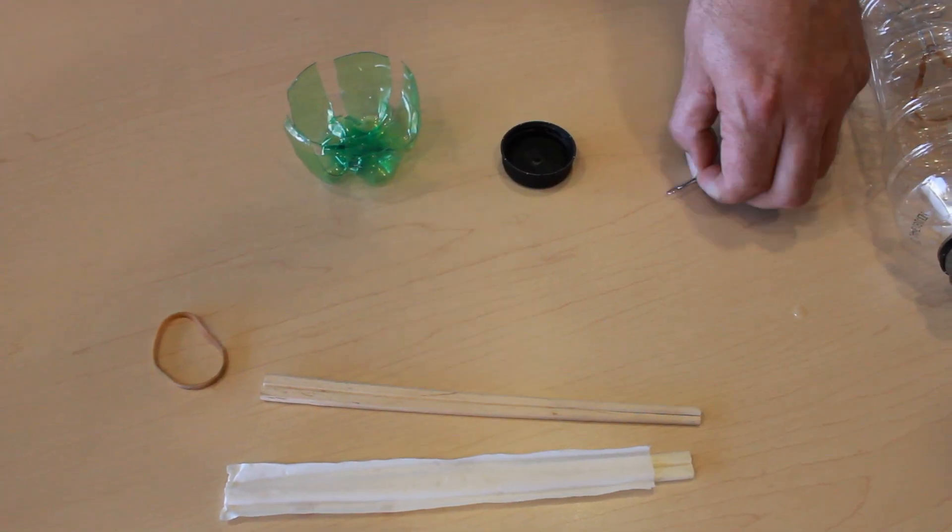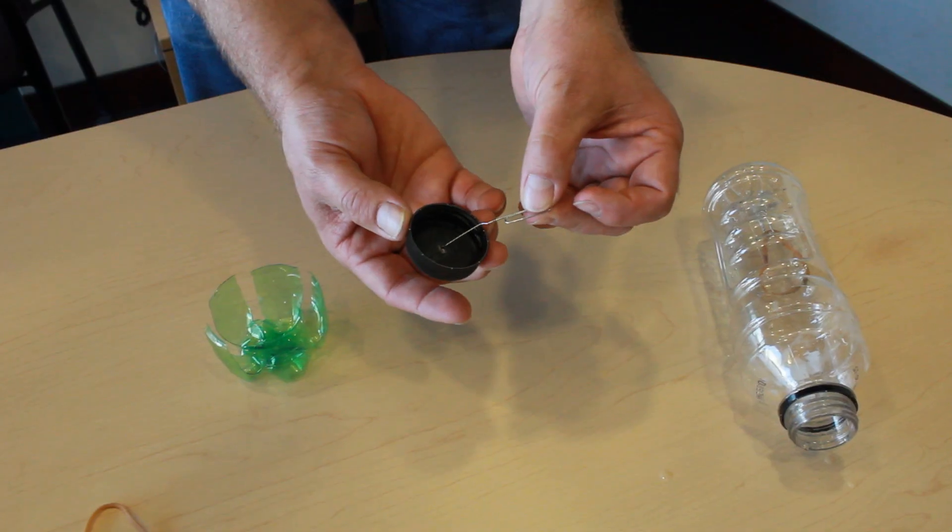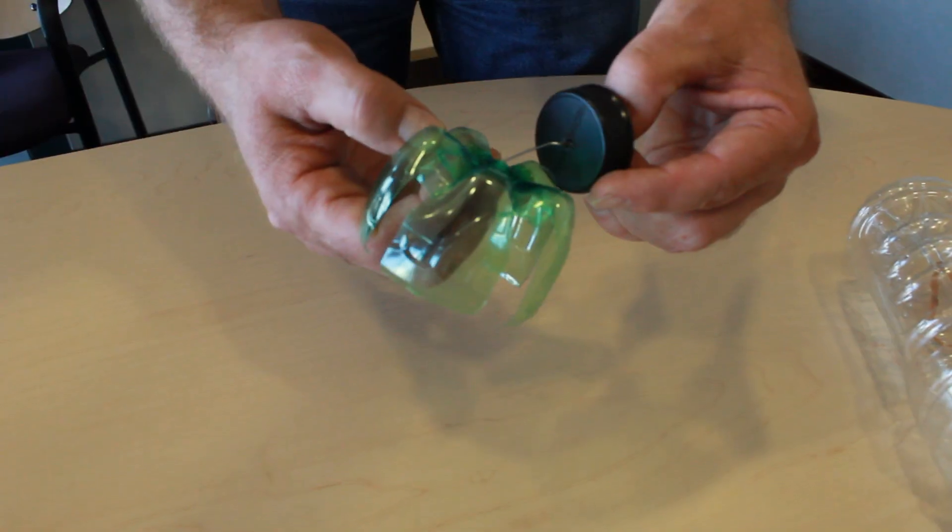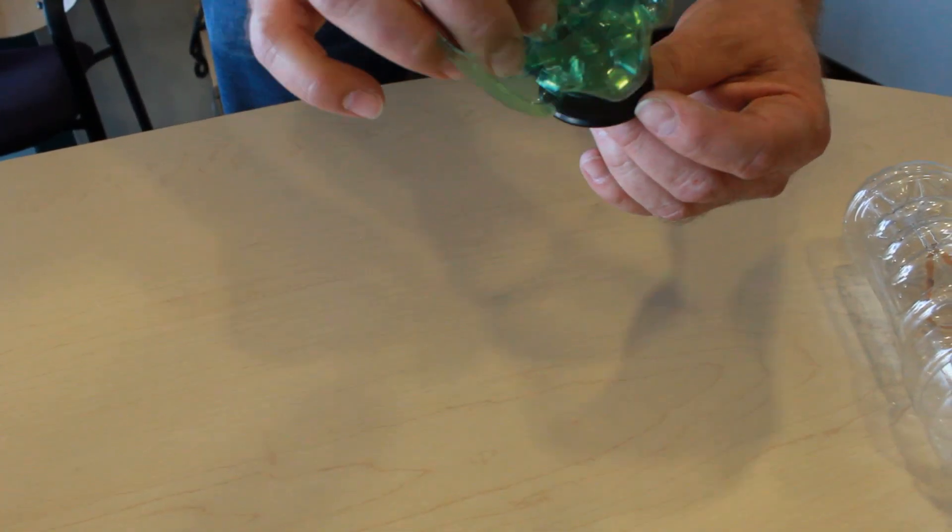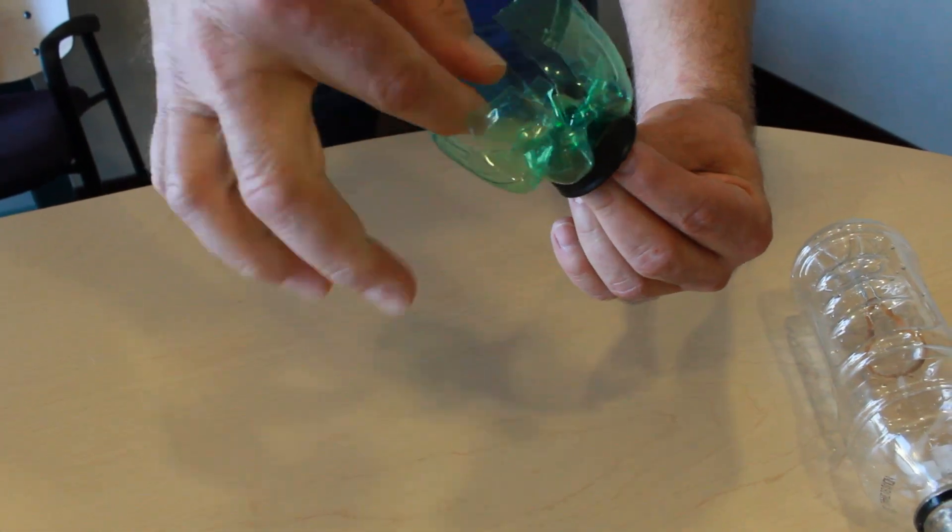Next, we're going to take another paper clip, straighten it out, put it through the hole in the inside of the bottle cap, and then through the hole in our propeller. Now to get it to not fall out, we're going to bend that over, just like we did the other one.